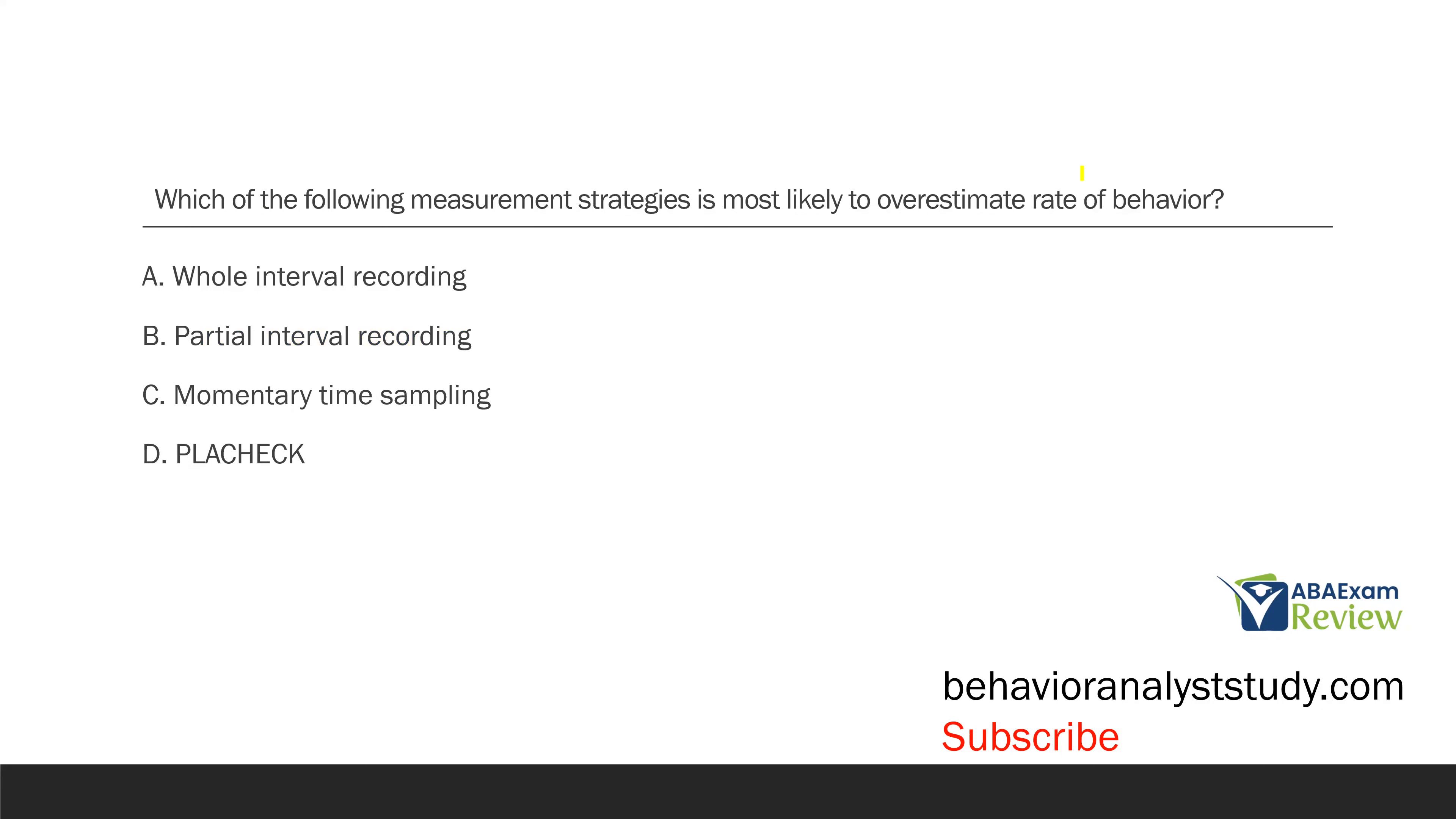Which of the following measurement strategies is most likely to overestimate rate of behavior? Again, pretty straightforward question. But we don't want to take these straightforward questions for granted because these are the easy ones. So, what measurement strategy is going to overestimate rate of behavior? When we overestimate rate, what are we doing? Well, rate is frequency over time. So, if we're overestimating that, we're probably going to have too high of a frequency, maybe too low of a time. Now, which one of these strategies is going to give us a large frequency or a large count? Whole interval recording? Well, maybe not necessarily because if my interval is 15 seconds and the behavior happens for 14 seconds, our data are going to indicate the behavior didn't happen at all. It's just not true. Whole interval tends to underestimate.